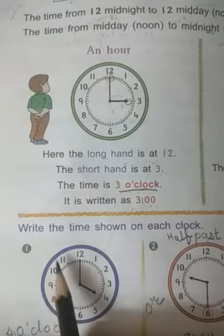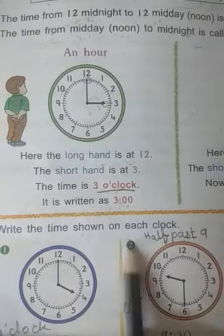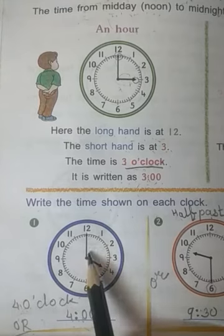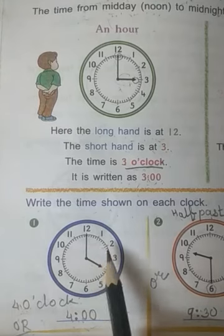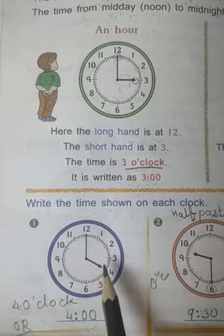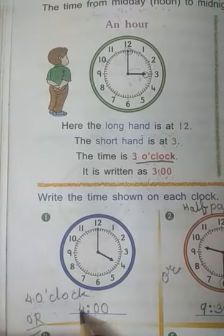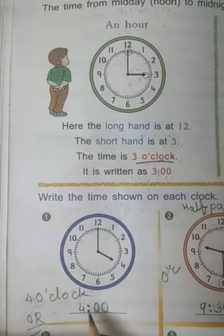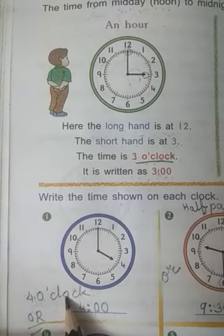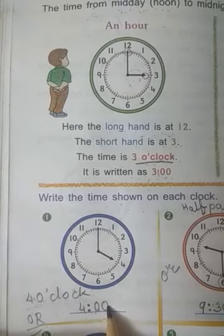Now we will solve this example: Write the time shown on each clock. The minute hand is at 12 — that is the long hand — and the short hand is at 4. So the time is four o'clock, or 4:00.